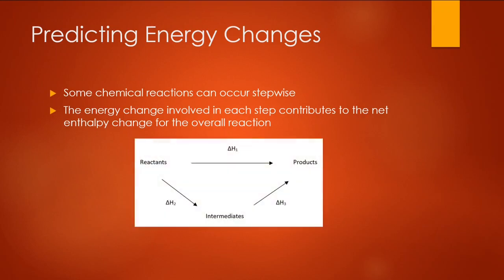That can be summarized in a diagram like this one, where we're interested in how much energy is involved to go from the reactants to the products directly, as represented by ΔH₁. But if we know the stepwise—going from reactants to intermediates is ΔH₂, and intermediates to products is ΔH₃—quite simply, Hess's Law tells us we can add ΔH₂ to ΔH₃ to figure out the value of ΔH₁.